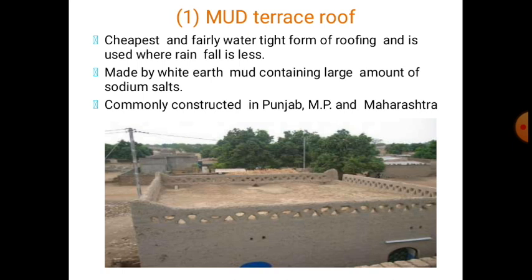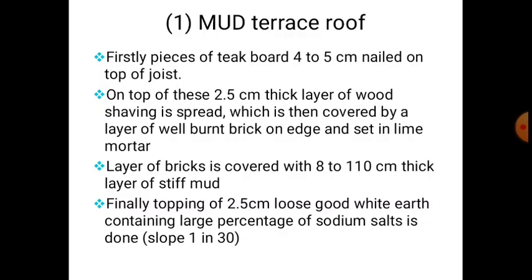The mud terrace roof is the cheapest and fairly watertight form of roofing, and is used where rainfall is less. It is made using white earth mud containing a large amount of sodium salt, and is commonly adopted in regions of Punjab, Madhya Pradesh, Maharashtra, etc., and in northern India as well. For constructing a mud terrace roof, we follow the following steps.